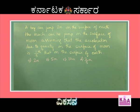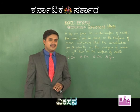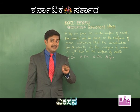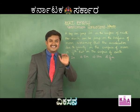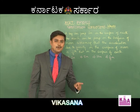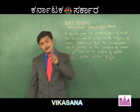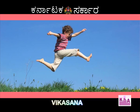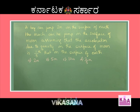Obviously, dear students, since acceleration due to gravity is lesser on the surface of the moon compared to that on the surface of earth, the boy can obviously jump to a greater height than he can on earth. Therefore, the answer should be more than 2 meters. So we can straight away eliminate options A and D.